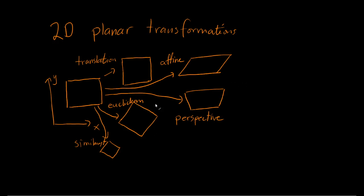For each of these transformations, we can associate a number, which is the number of degrees of freedom required to describe this kind of motion. For translation, two degrees of freedom are required, because we need a translation in the x direction and a translation in the y direction. For the Euclidean transformation, we need those two plus one more to account for the orientation — how much it should be rotated. Building from there, the similarity transform requires an additional element for the scaling factor. And finally, the affine and perspective transformations have six and eight degrees of freedom respectively.